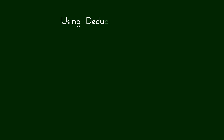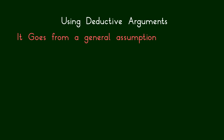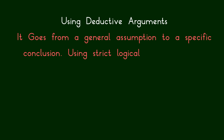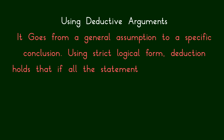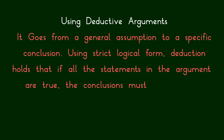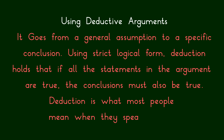Using deductive arguments: it goes from a general assumption to a specific conclusion. Using strict logical form, deduction holds that if all the statements in the argument are true, the conclusions must also be true. Deduction is what most people mean when they speak of logic.